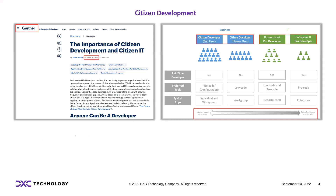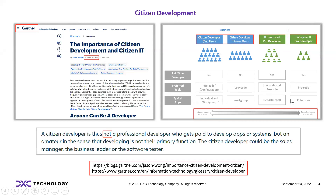On the left-hand side there is an article from Gartner about the importance of citizen development. On the right-hand side there are citizen developers and professional developers. The number of professional developers is far smaller than the potential number of citizen developers. Citizen developers are solution-focused, whereas professional developers are technology-focused. A citizen developer is not a professional developer — developing is not their primary function.